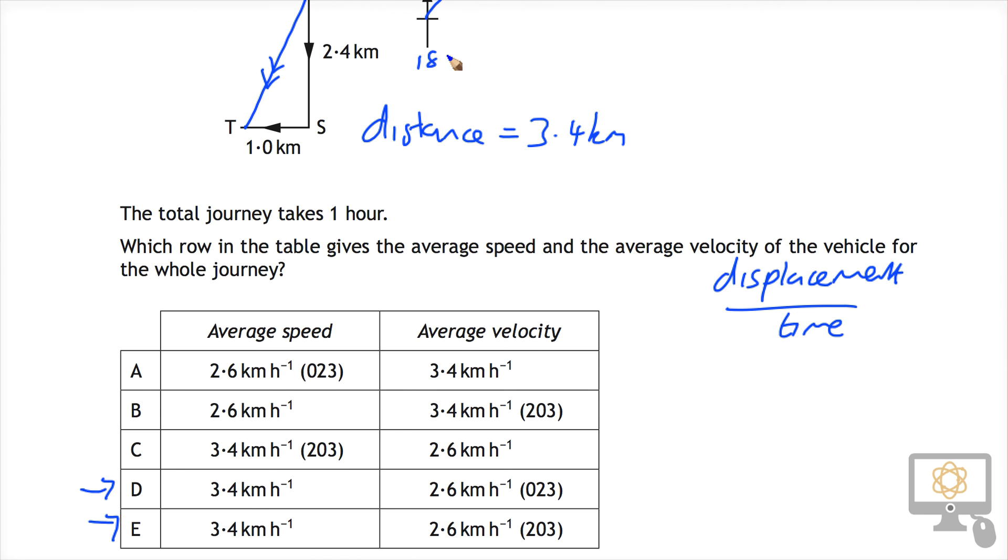203—that's 180—203 is somewhere down there in that direction, and definitely this vector is pointing in the same direction as this one here. So that would suggest that 203 is the correct value and so our answer has to be E.